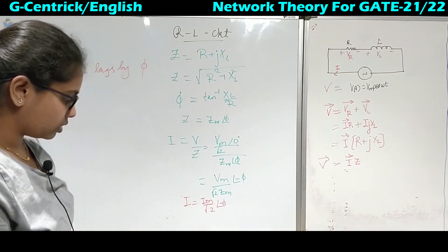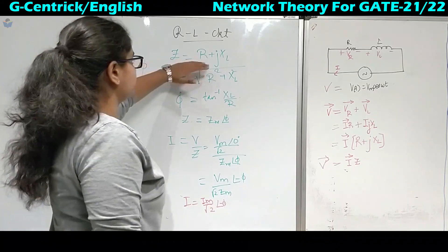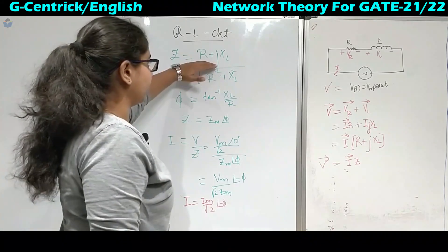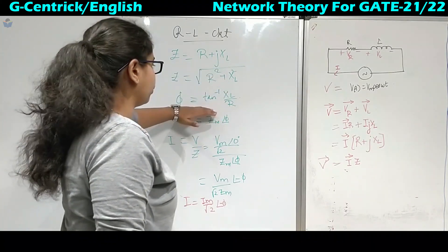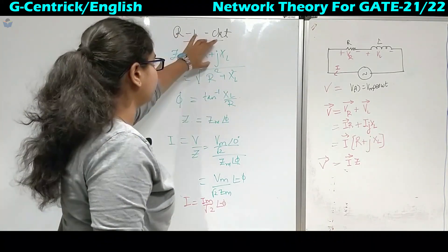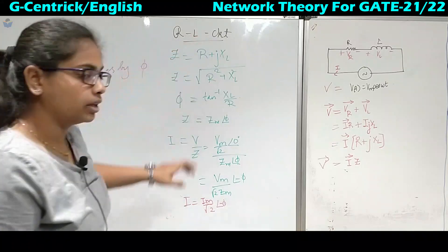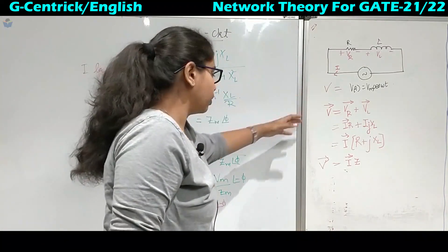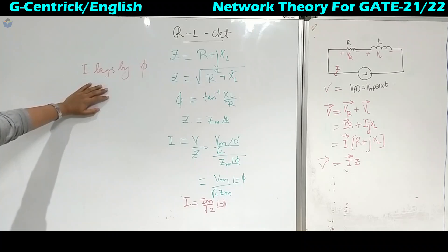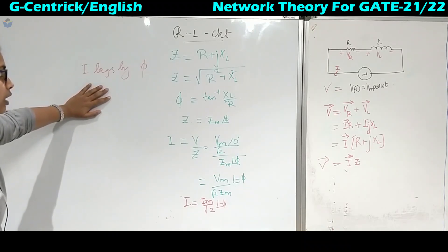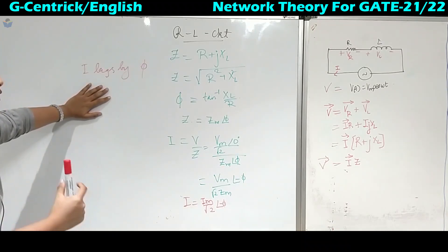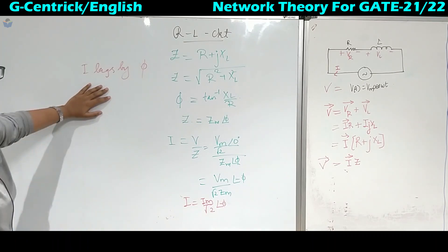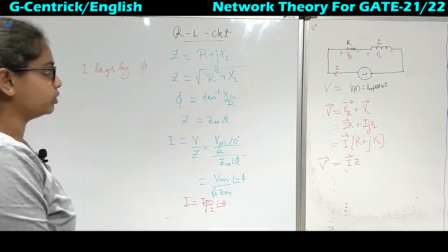So that is how we calculate the magnitude and angle of the impedance. Whenever R and L are in series, I lags V by phi degrees. This is the RL circuit analysis. Now we will see how to find the instantaneous and average power for this circuit.